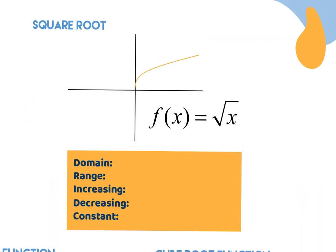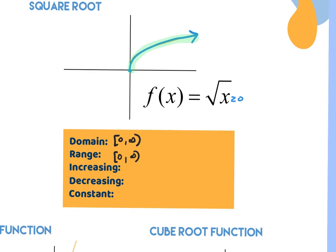The square root function has a point at zero, zero and looks like half a parabola turned on its side. This is the first time we have a restriction on domain because of the square root — whatever's underneath must be greater than or equal to zero. So the domain is from zero to positive infinity. The range: lowest y is again at zero, and the arrow points right and up, so it goes to positive infinity. Moving left to right, it is only increasing — from zero to positive infinity. There is no decreasing and no constant.